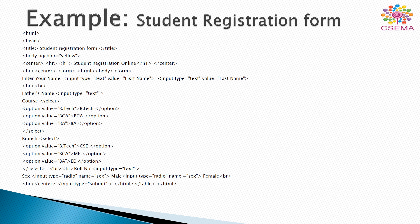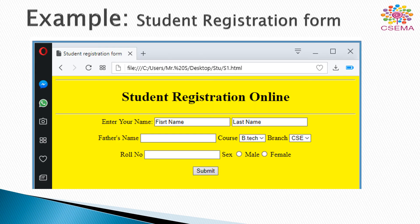Here we create a student registration form using all the form elements and controls. The first element is the HTML tag, then head, and the title is defined as 'Student Registration Form.' After saving it — for example as student.html — the output is as follows: a student registration form with fields for name, father's name, a courses drop-down menu, a branch field for CSE, and a submit button.